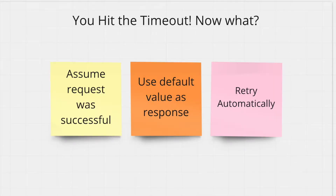Let's say you hit the timeout — you waited five seconds and service B did not get back to you. Now what? There are multiple things you can do. The first one is you can assume that the request was successful, but this is the last thing you should do. You should never assume anything about what happened on the server because you don't know for sure whether service B processed your request or not, so it's not safe to assume the request was successful.